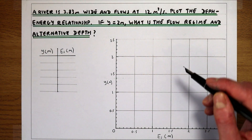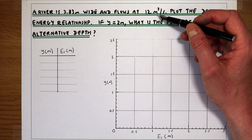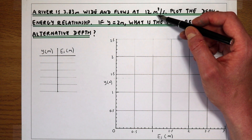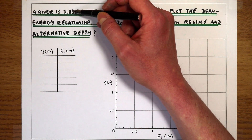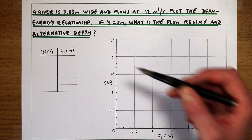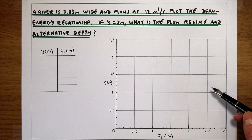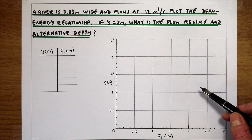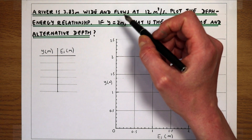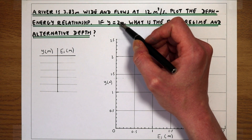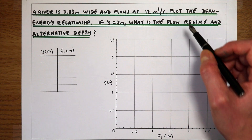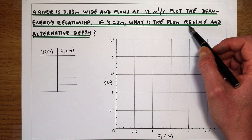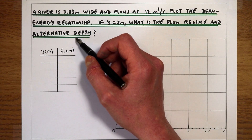In this example we have a river that's flowing at 12 meters cubed per second and is 3.83 meters wide. What we've been asked to do in the question is first plot the relationship between specific energy and flow depth, and then if we assume the river is flowing at 2 meters deep, use that relationship to work out what the flow regime is and what the alternative depth is.